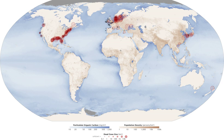Aquatic and marine dead zones can be caused by an increase in nutrients, particularly nitrogen and phosphorus in the water, known as eutrophication. These chemicals are the fundamental building blocks of single-celled, plant-like organisms that live in the water column, and whose growth is limited in part by the availability of these materials. Eutrophication can lead to rapid increases in the density of certain types of phytoplankton, a phenomenon known as an algal bloom.